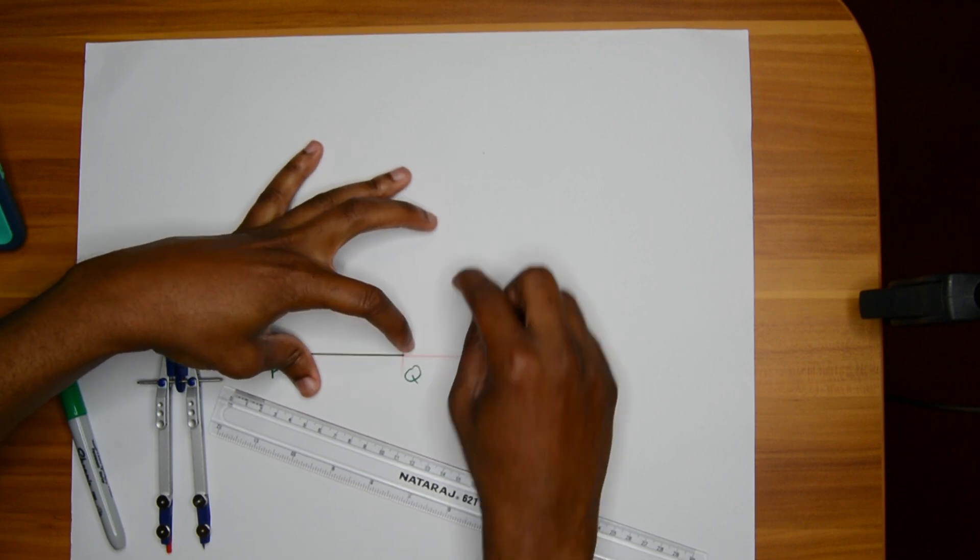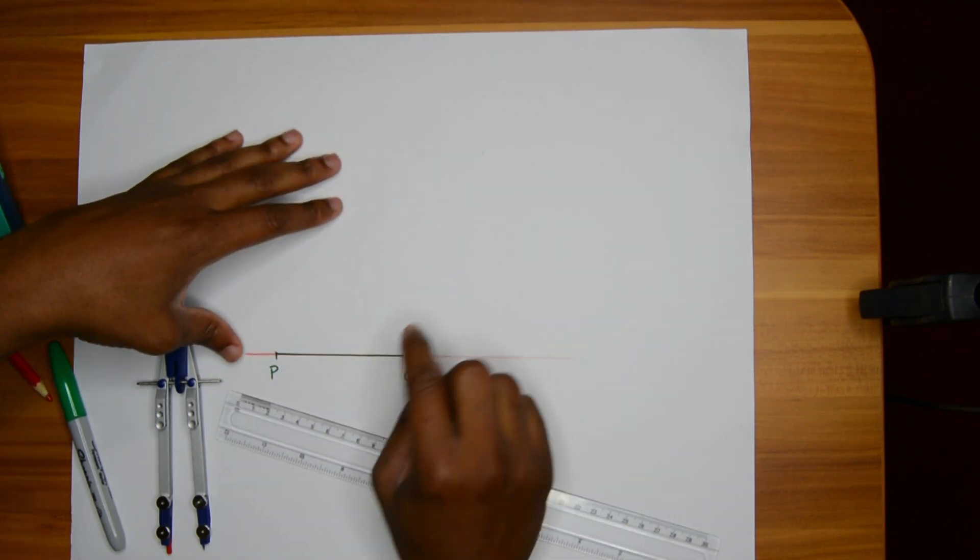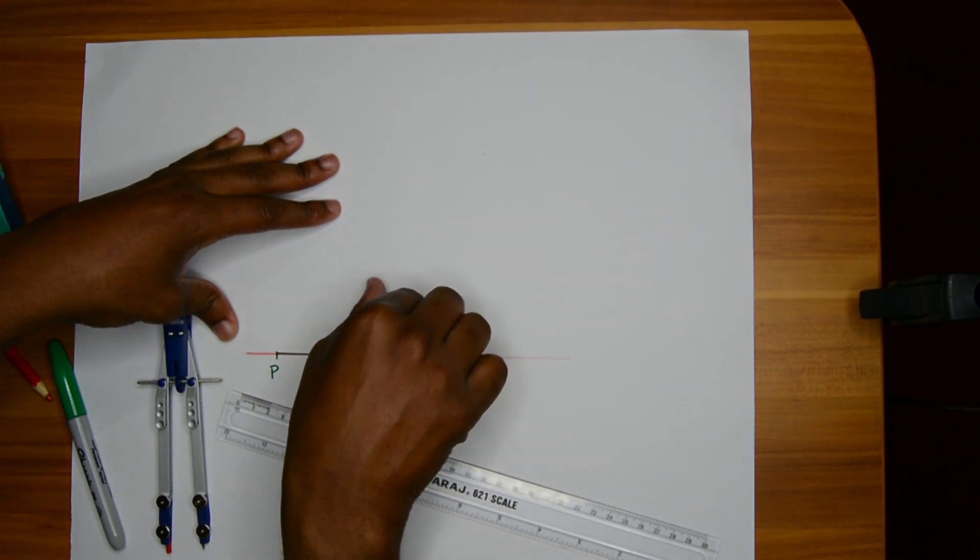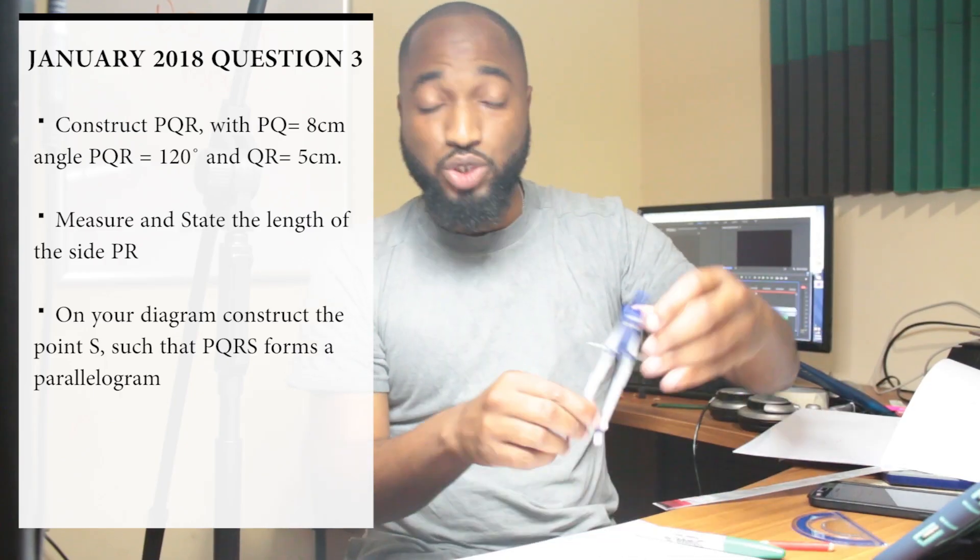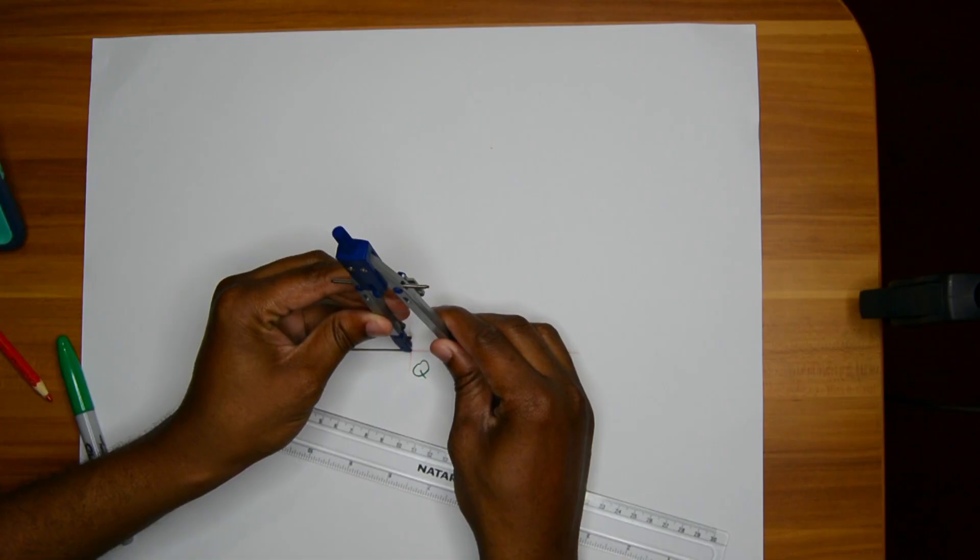You can either construct a 60 coming from this side, or you can actually construct the 120 by making a 60 and then another 60. Whatever floats your boat. I will just construct the 60 on one side because 60 and 120 makes 180.